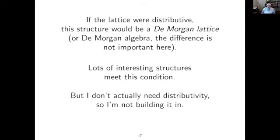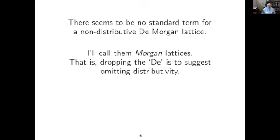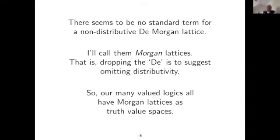If the lattice were distributive, you'd say this was a De Morgan lattice or De Morgan algebra. But I don't actually need distributivity. Apparently the only name for a De Morgan algebra that's not distributive is a 'non-distributive De Morgan algebra,' which sounds a little misleading — you don't mean it's not distributive, you just mean you don't care if it is. Since there's no standard term, I'm introducing what I'll call Morgan lattices — dropping the 'D' to suggest I'm dropping distributivity. Someone notes they're sometimes called bounded involution lattices, but I like 'De Morgan' — it's shorter, and it's also the name of a room.